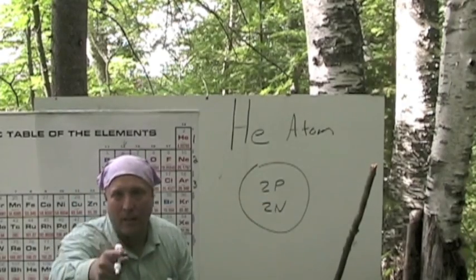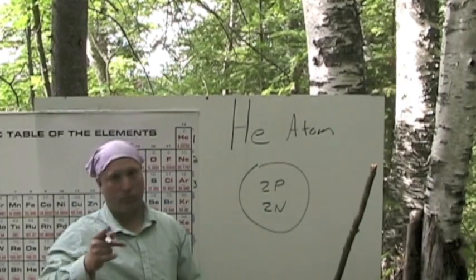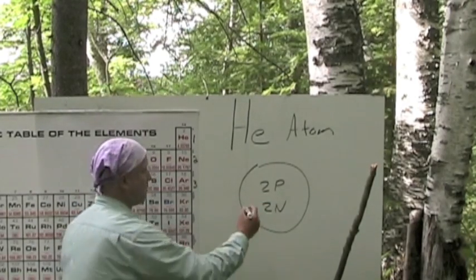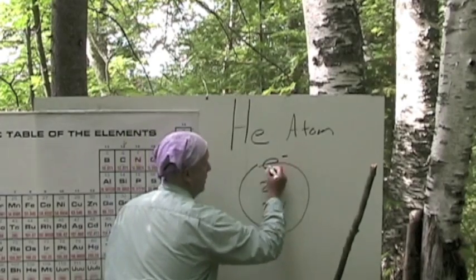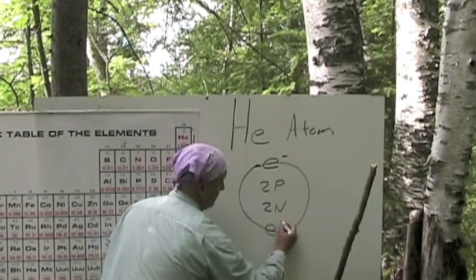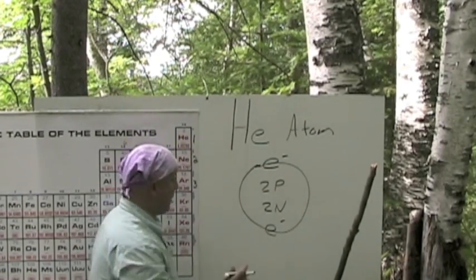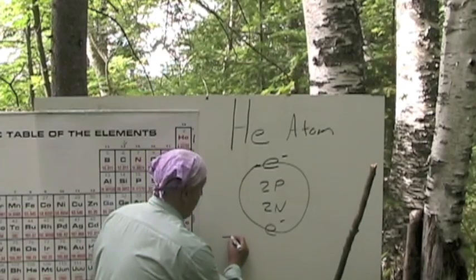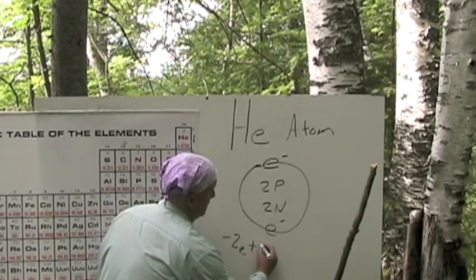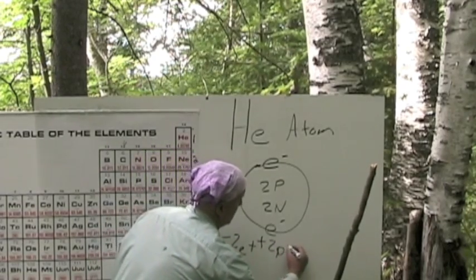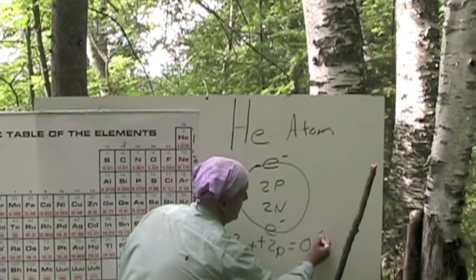Now, if we have 2 protons, how many electrons do we have? You're correct. 2. So, we put on 2 electrons. Now, to do our formula, we have negative 2 electrons plus positive 2 protons equals 0 net charge.